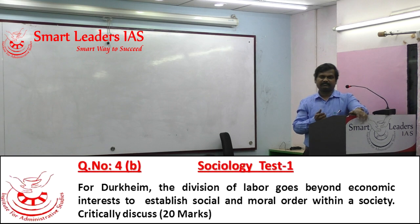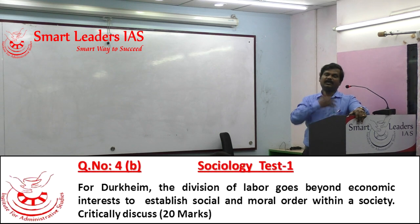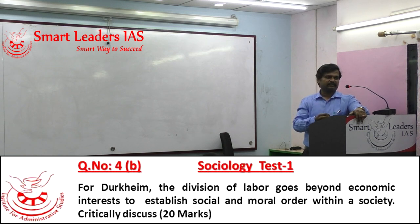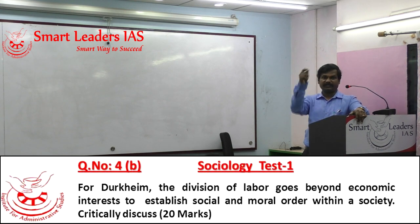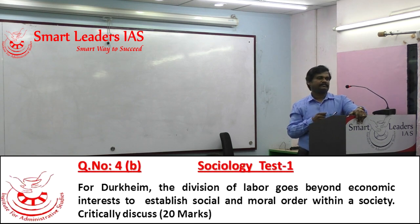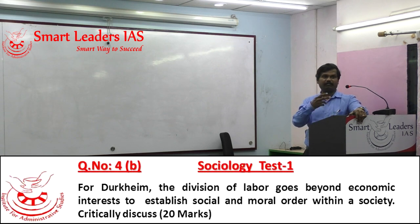Durkheim classifies society into two types: a simple society characterized by mechanical solidarity and a complex society characterized by organic solidarity. Mechanical solidarity is a solidarity of resemblance — unity because of uniformity. Organic solidarity — unity because of interdependence. So division of labor is what is the order of the time; he speaks about the need for structural differentiation in the form of specialization.